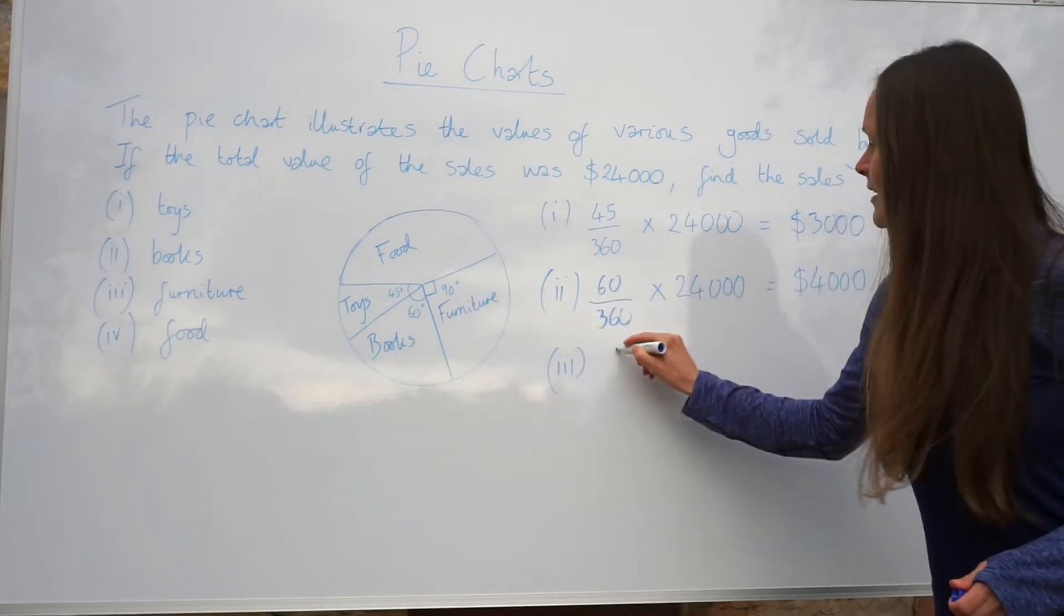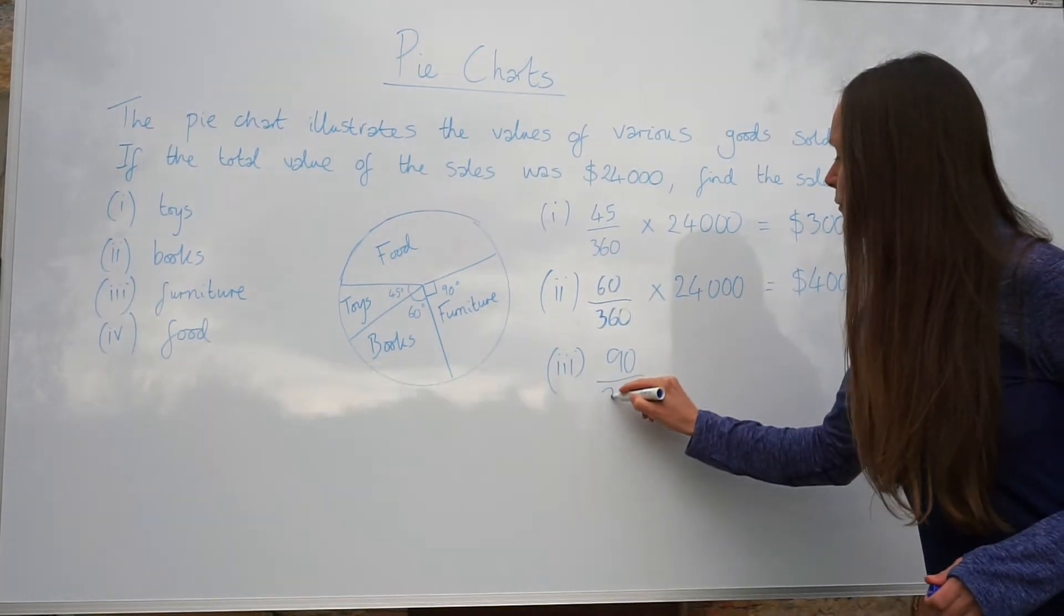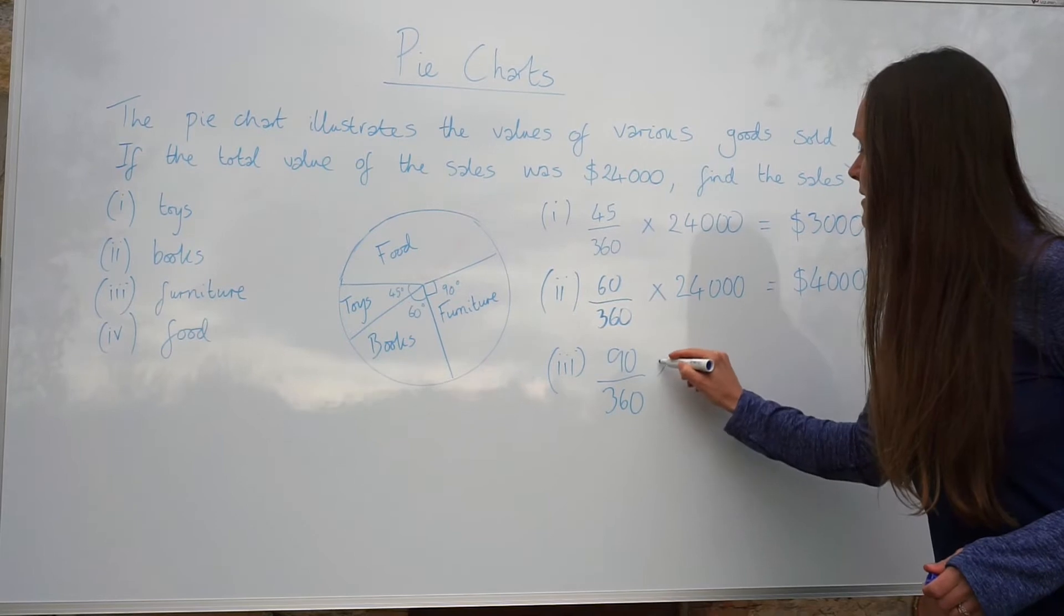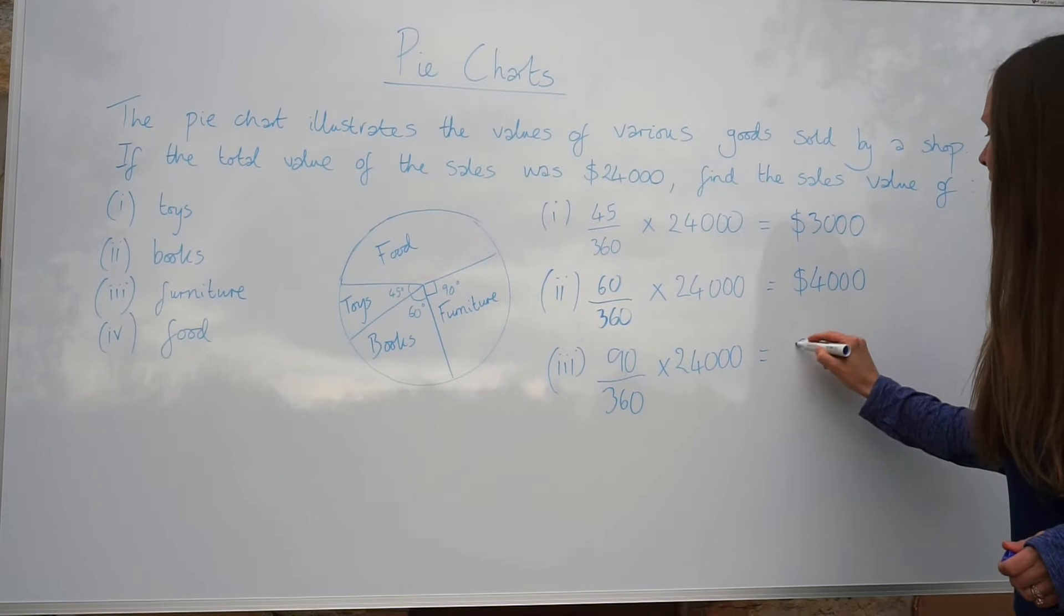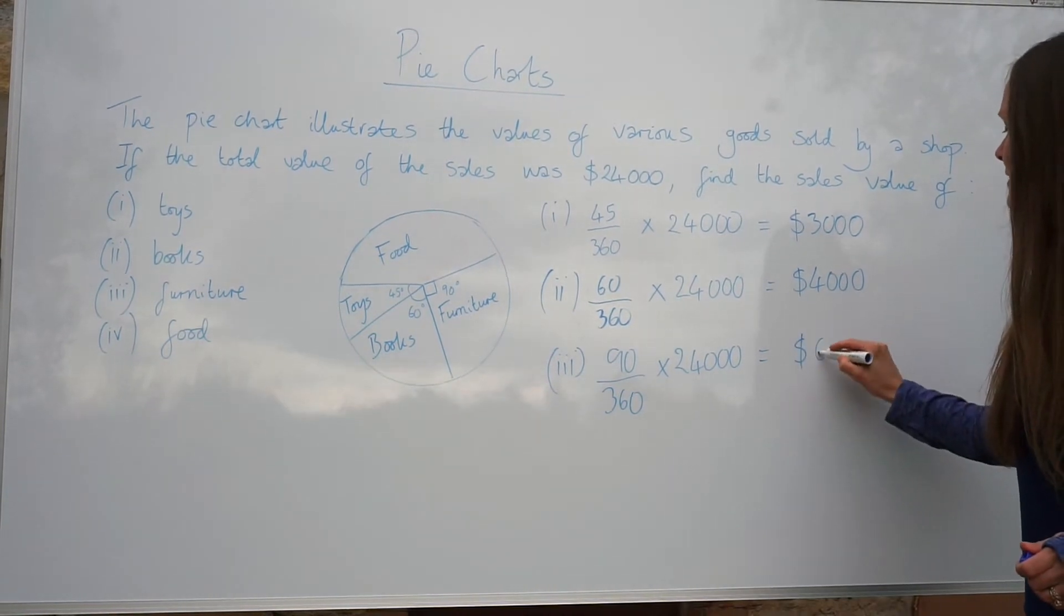90 degrees over 360 degrees, multiply by the total value again, $24,000. And this time we get $6,000.